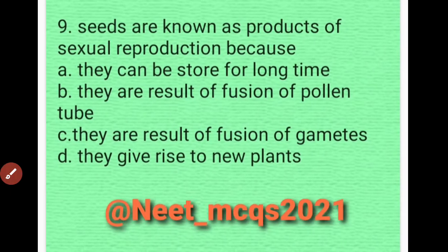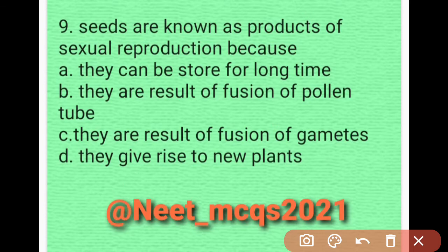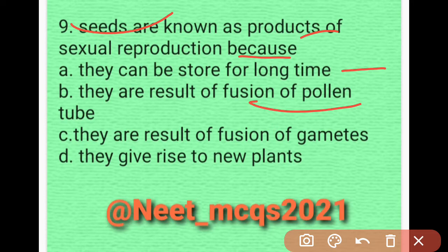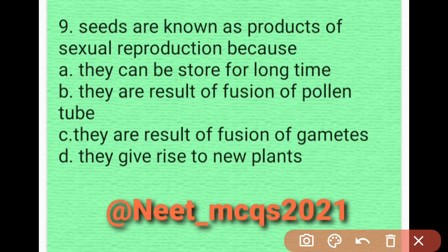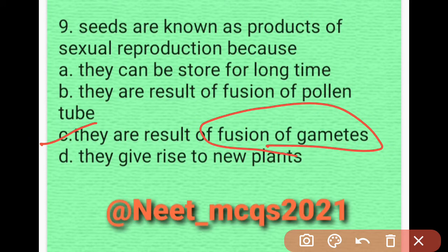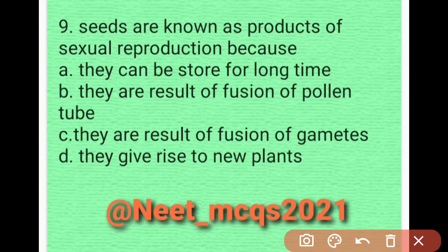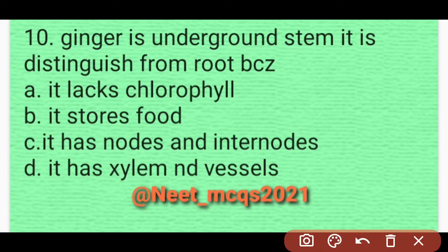Question 8: Seeds are known as products of sexual reproduction because — options include: they can be stored for a long time, they are the result of fusion of pollen tube, or they are the result of fusion of gametes. Option C is correct — seeds are the result of fusion of gametes.